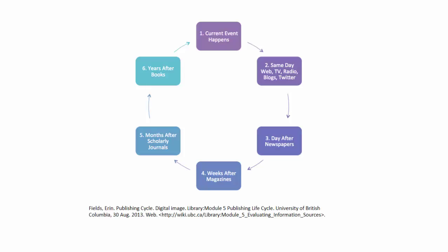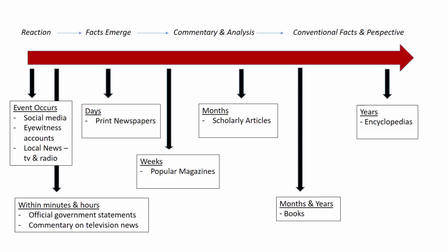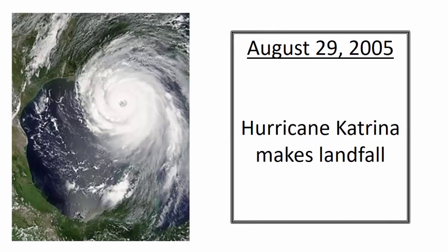Understanding where on the information cycle your article was generated helps you assess its value to your research. Here, we will break down this well-known graphic into working parts while using a historic event. The red arrow depicts time moving left to right. The top row denotes the kinds of information you can expect to see over time, from initial reaction to a set of conventional facts. Below the red arrow is a breakdown of source types as they emerge in time.